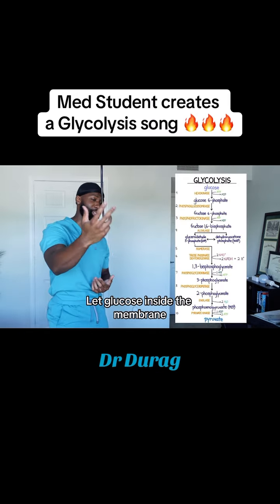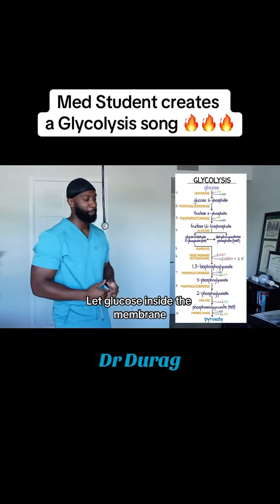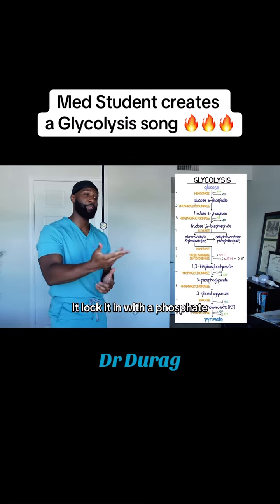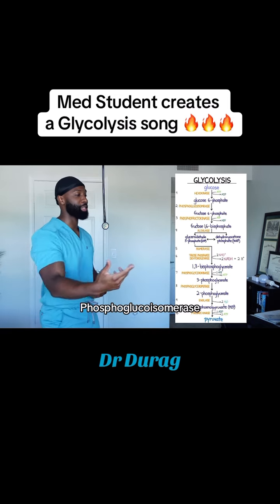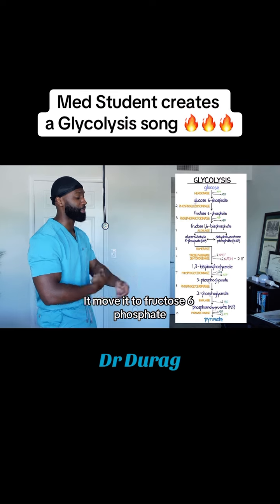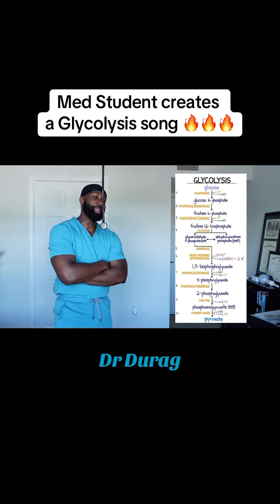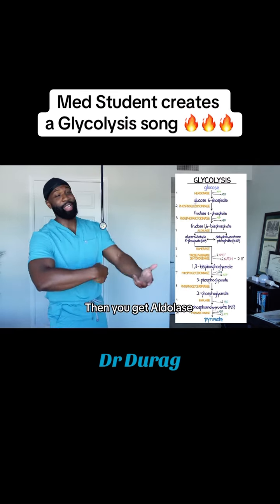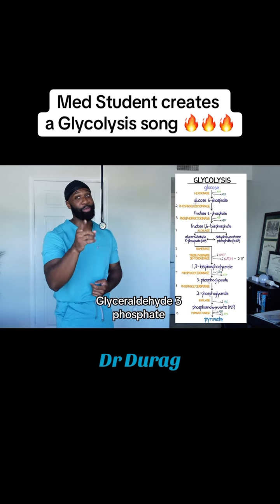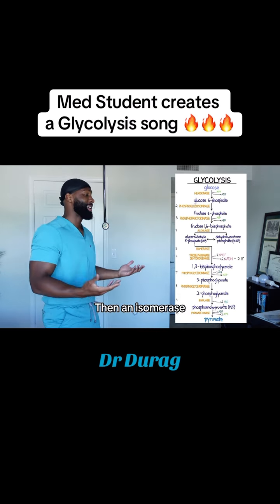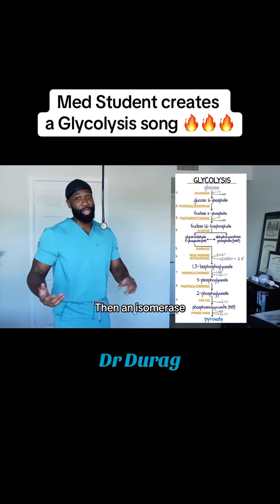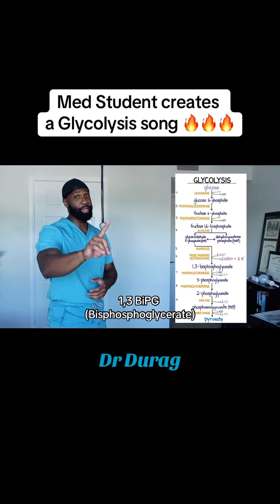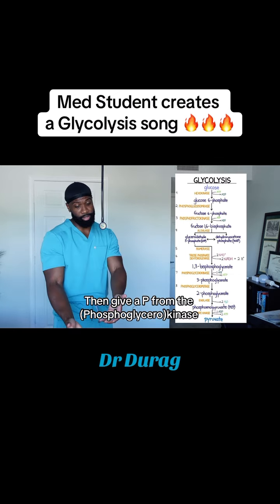Glucose goes to the cell inside the membrane. Then kinase locks it in with a phosphate — phosphoglucose isomerase moves it to fructose-6-phosphate. Take PFK and then you make fructose-1,6-bisphosphate. Then you get aldolase with glyceraldehyde-3-phosphate. Then an isomerase — 2 ATP and 2 NADH. 1,3-bisphosphoglycerate, then give a phosphate to the kinase.